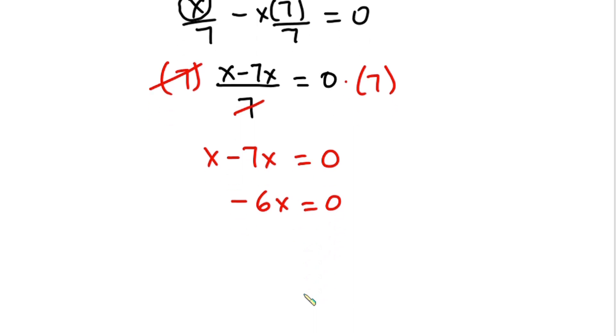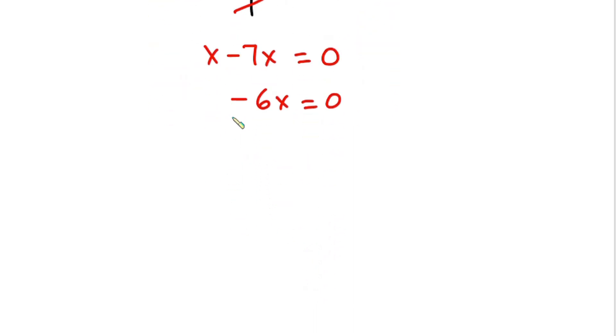We are looking for x, so let's divide each side of the equation by negative 6 so that this one will cancel this. We have x is equal to zero over negative 6, that is still zero.